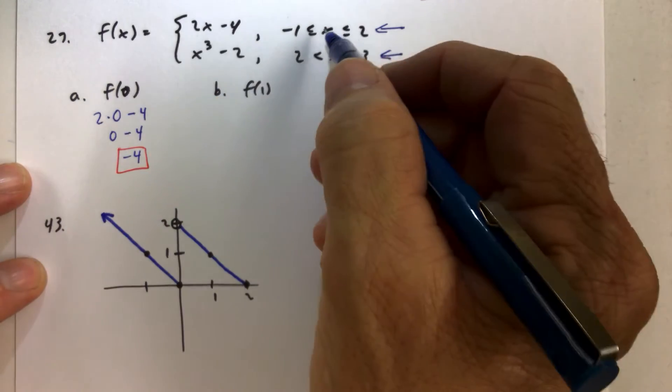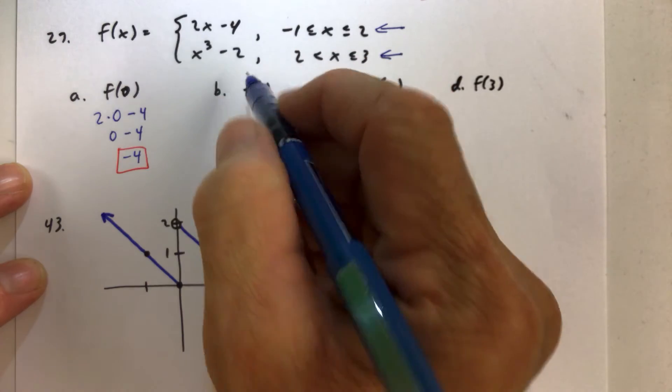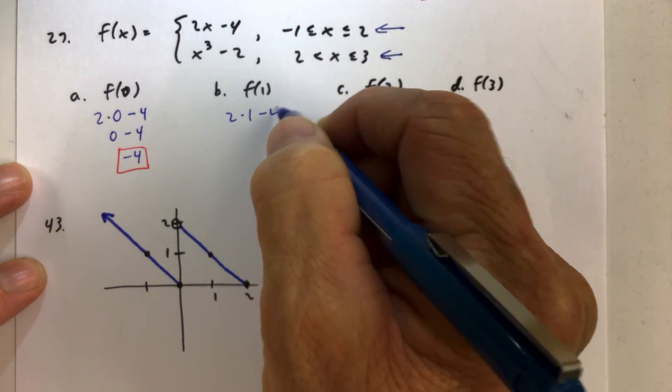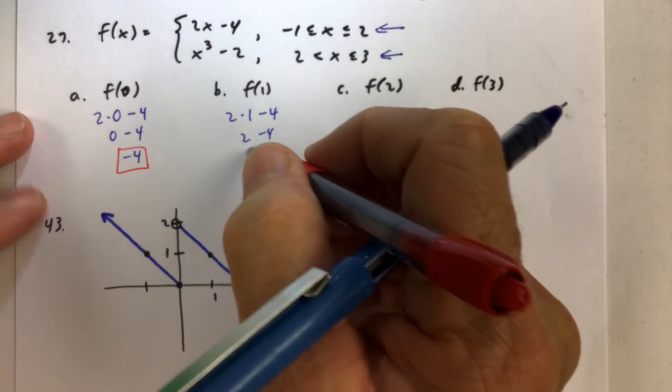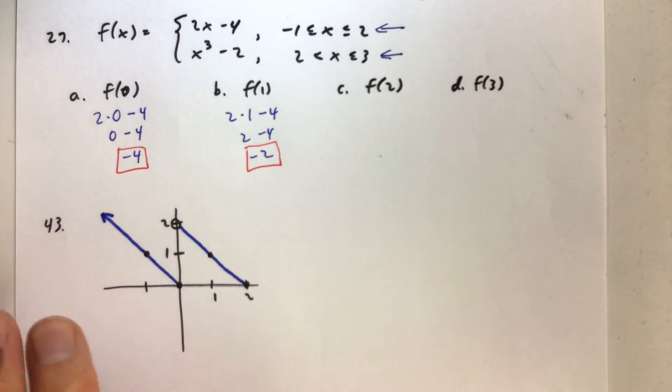f of 1. 1 is also in between negative 1 and 2, so we replace x with 1. And just continue with that process, simplifying our expression. And we get f of 1 has a value of negative 2.